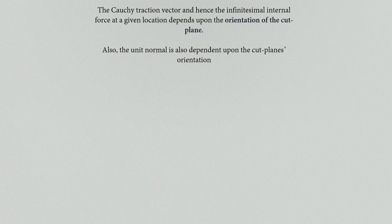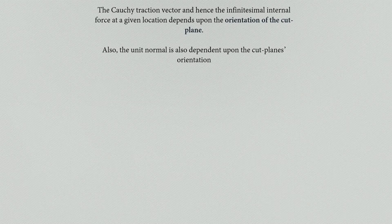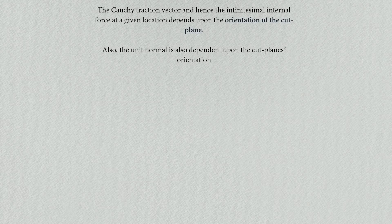We saw that the traction vector was calculated on a surface with unit normal n. As you change the direction of that unit normal — or equivalently change the orientation of the cut plane — the traction vector changes both in direction and magnitude. So we can say that as you change the normal unit vector at a point, the traction vector at that point also changes. Note that all observations are now restricted to a single point inside the body.